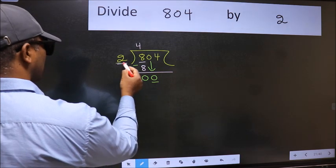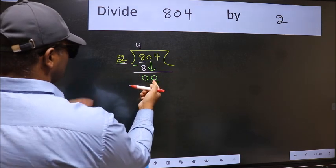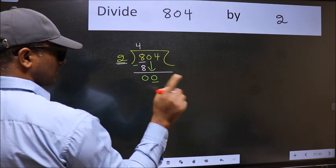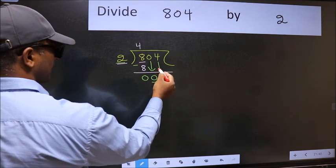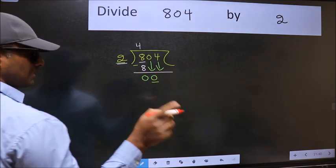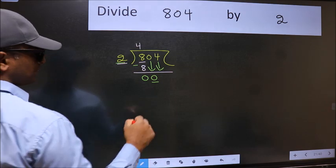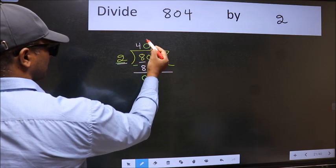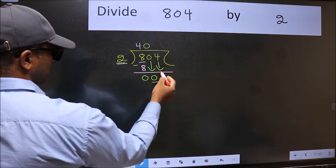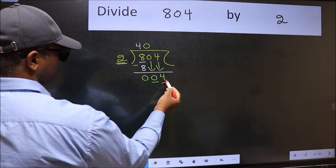Now here we have 0 and here 2. 0 is smaller than 2, so we should bring down the second number. And the rule to bring down the second number is we should put 0 here. Then only we can bring down this number. Now 4.